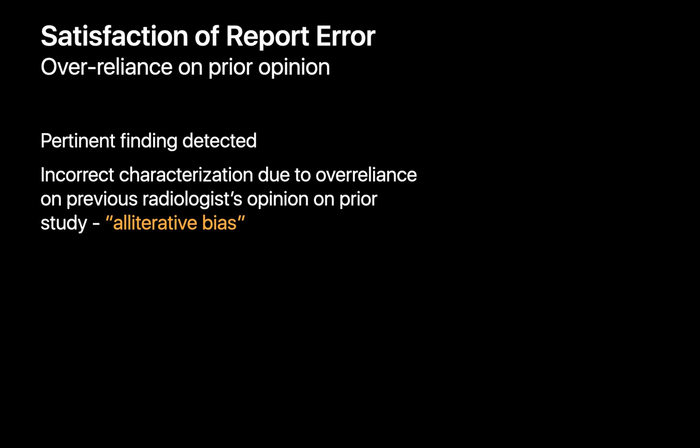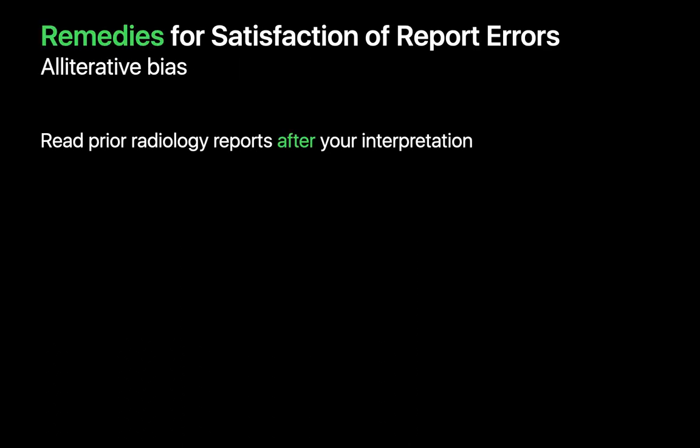Satisfaction of report errors occur due to alertative bias, when our interpretation of the current study is biased by the report of the prior study. This can happen in different contexts, like when the prior study was read by a senior colleague in your department, or when you're reading out a resident and are biased by their preliminary interpretation. One remedy to minimizing this type of error is to read prior radiology reports after your own interpretation.